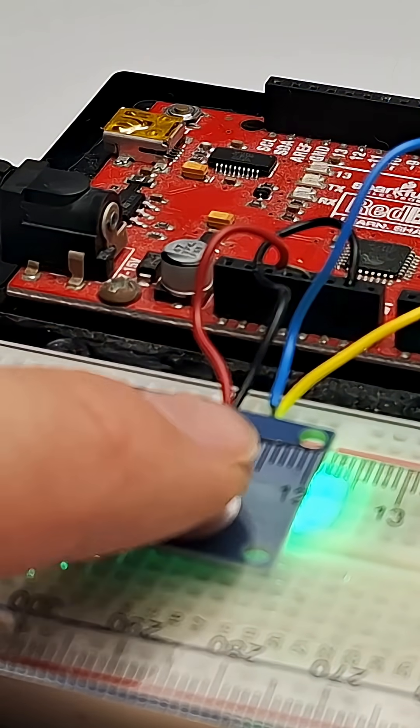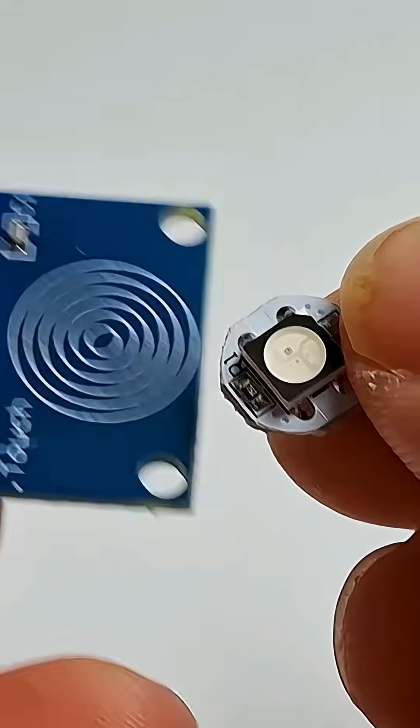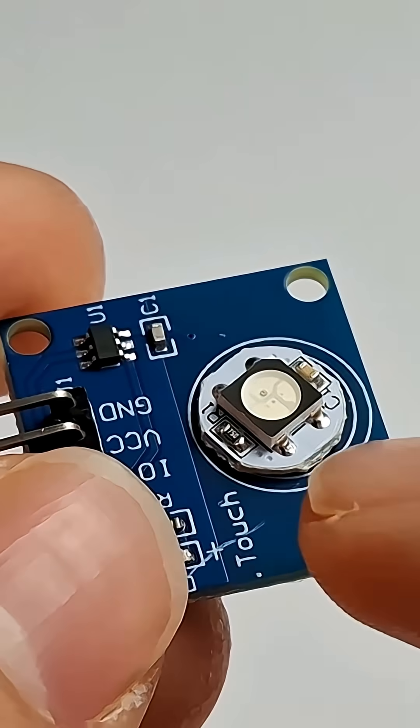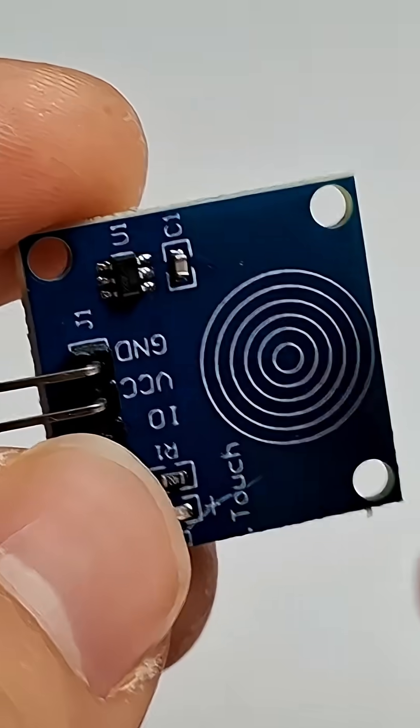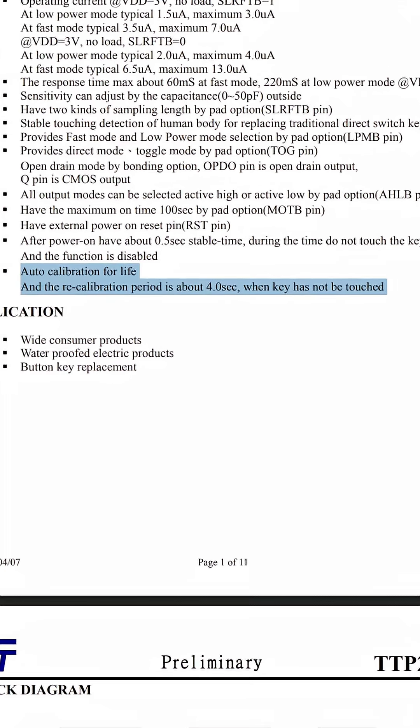The next question is how do we get our touch sensor and our addressable LED to occupy the same space so we can trigger the button by tapping on the illuminated symbol? Well, lucky for us, the ICs on these capacitive touch sensors are auto-calibrating, which means it doesn't really matter what shape our electrode is, it will still work.